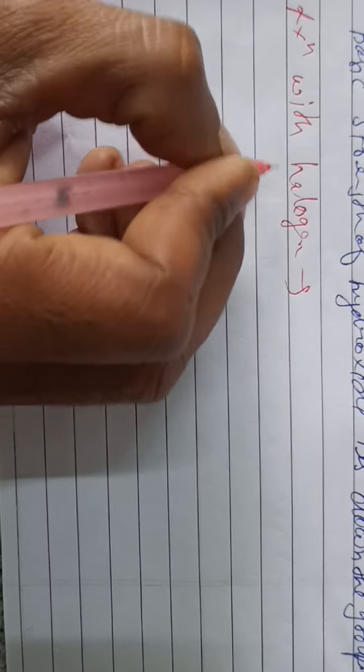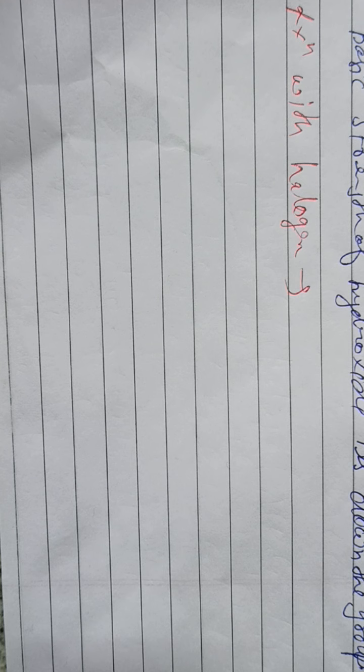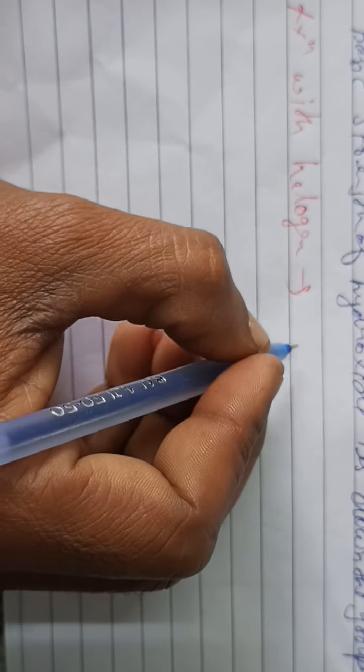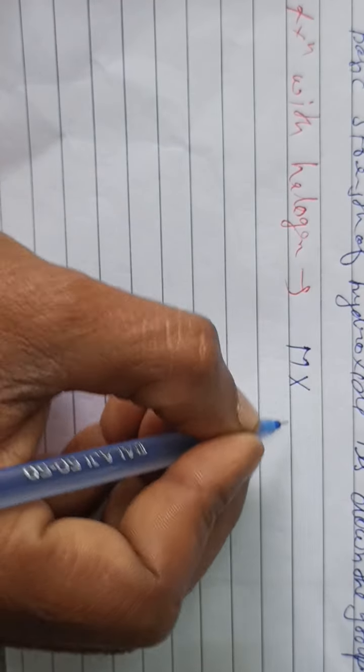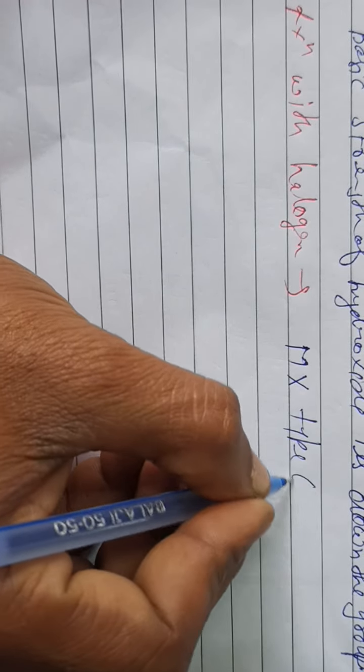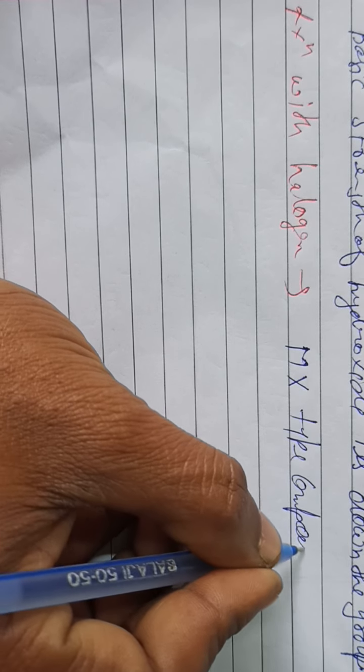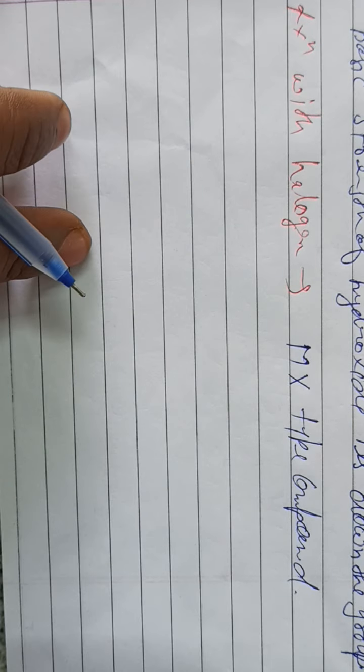Halogens means group 17 elements. When alkali metals react with halogen, then it forms MX type compound.